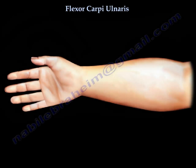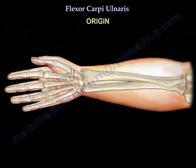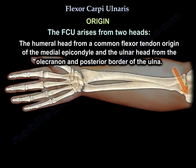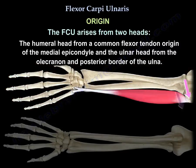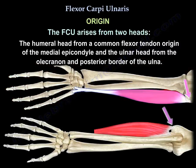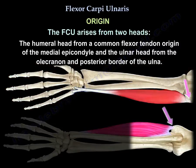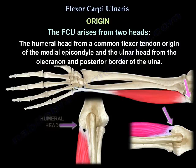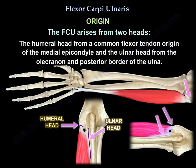The Flexor Carpi Ulnaris origin: it arises from two heads — the humeral head from the common flexor tendon origin at the medial epicondyle, and the ulnar head from the olecranon and the posterior border of the ulna.